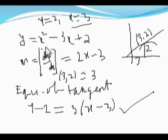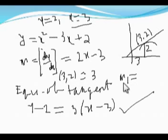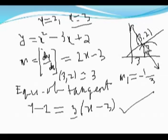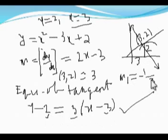The normal equation can also be calculated from this. Here m = 3, so what will be m1? We have the relation m × m1 = −1, so m1 = −1/3. The normal is also at the same point (3, 2). So the normal is a straight line passing through (3, 2) with tendency −1/3: y − 2 = (−1/3)(x − 3).